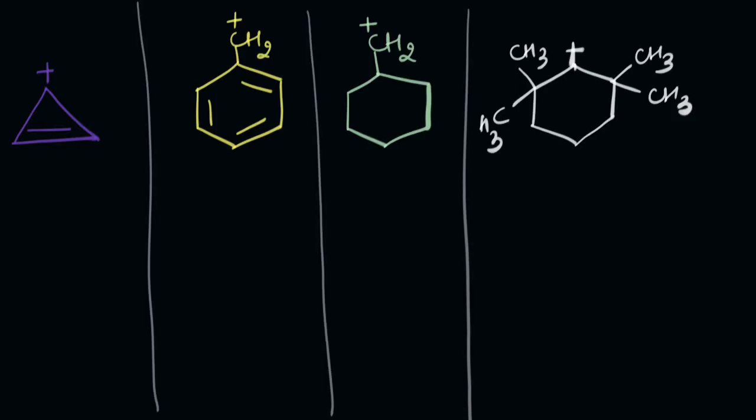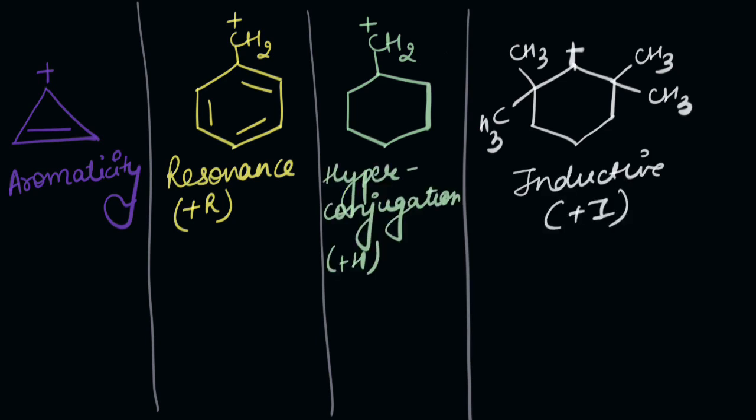So what have I seen until now? That the first one is stabilized by aromaticity. The second one by resonance. And the third one has hyperconjugation due to one alpha hydrogen, while the fourth one is stabilized via inductive effect provided by the methyl groups that are present close to it. And I already know how aromaticity plays the strongest role. So the first one is the most stable carbocation, while the last one is the least stable carbocation.